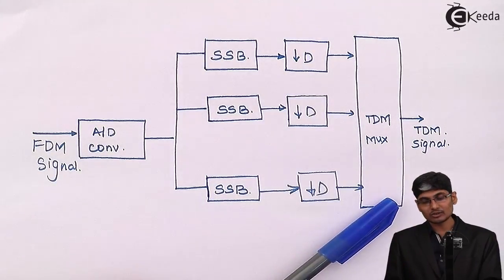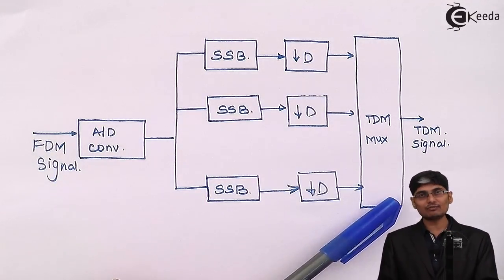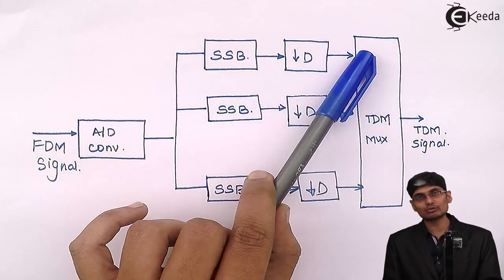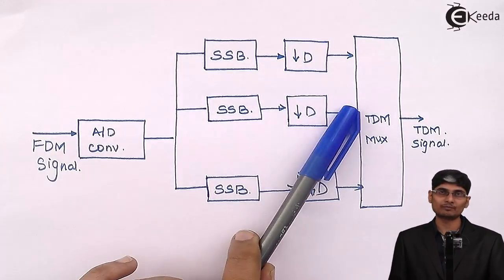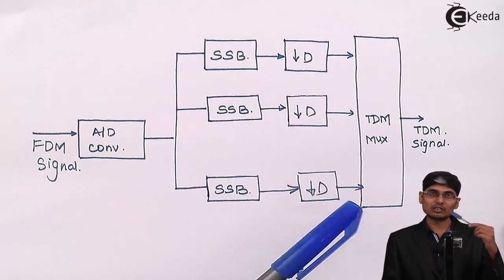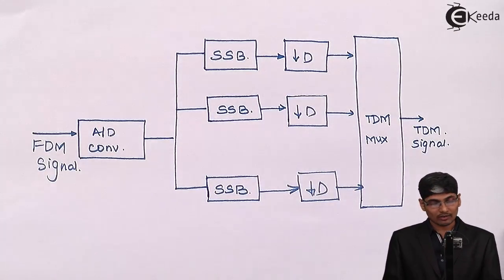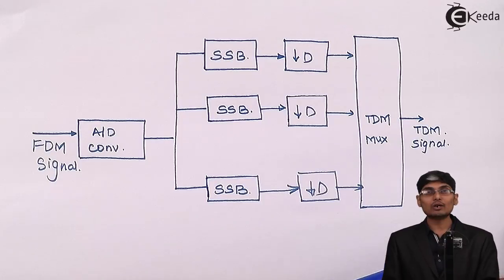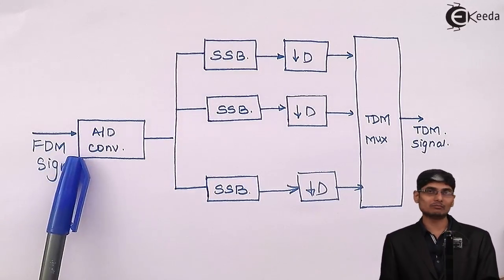It will be there on the first channel for some time, then it goes to the second channel and so on. It will select one of the inputs using a switch. So we have converted an FDM signal to a TDM or time division multiplex signal.